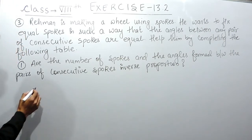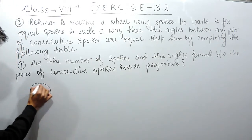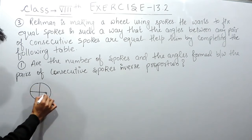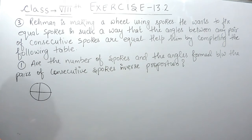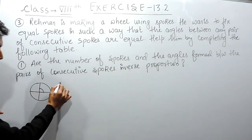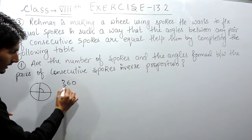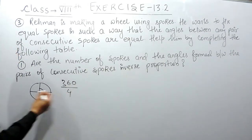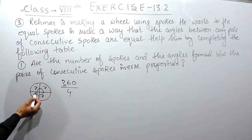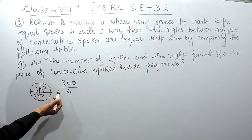This is the wheel and if I am using four spokes, purely the angle between them was 360 upon 4. This I have already told you because all the angles are equal. This is given to you. So clearly the sum of all four angles will be 360.